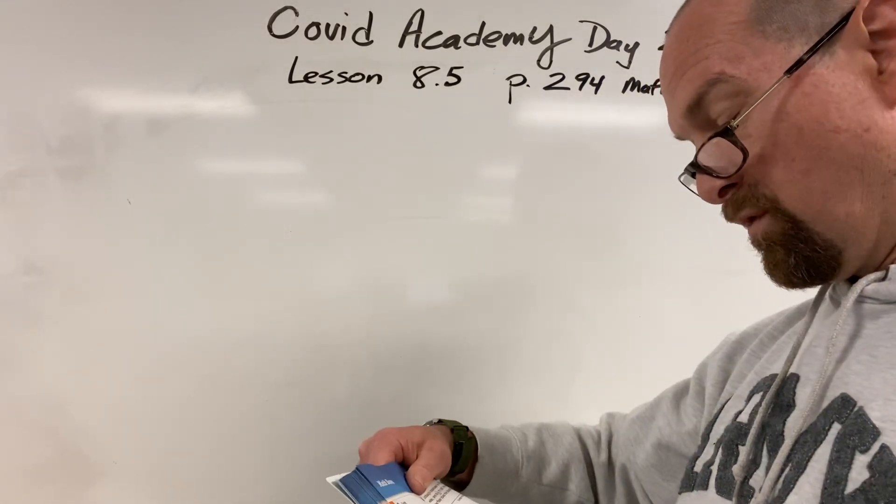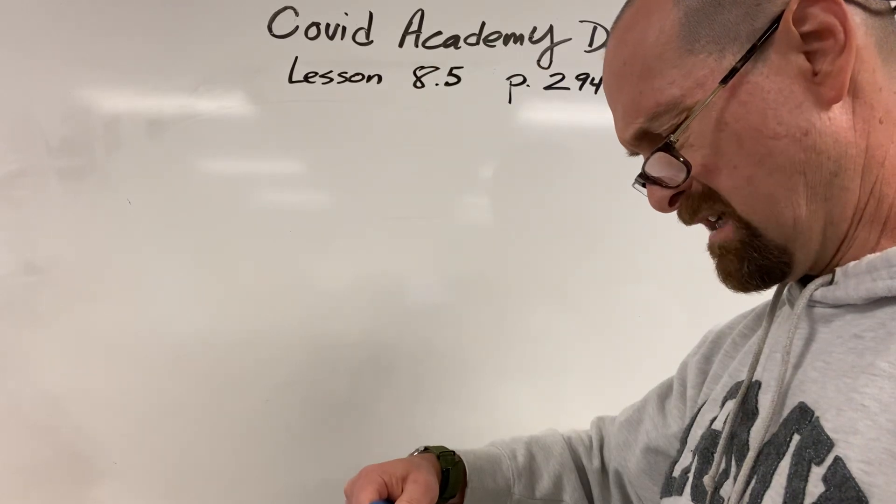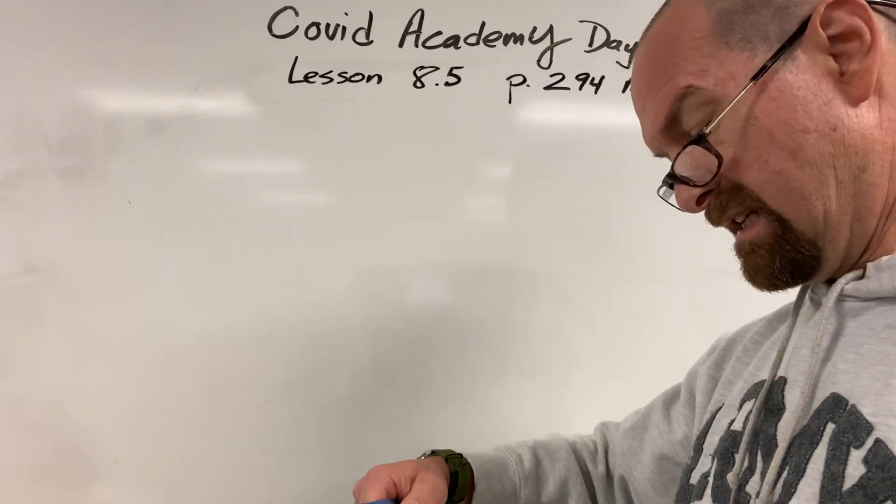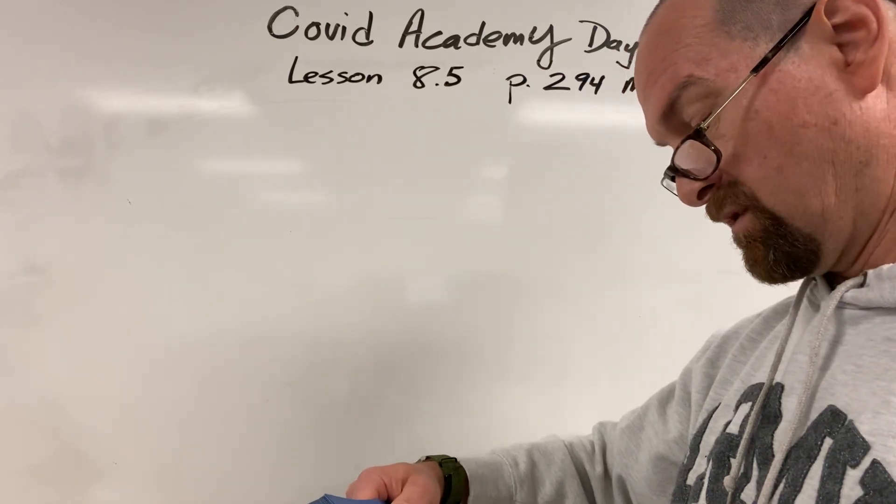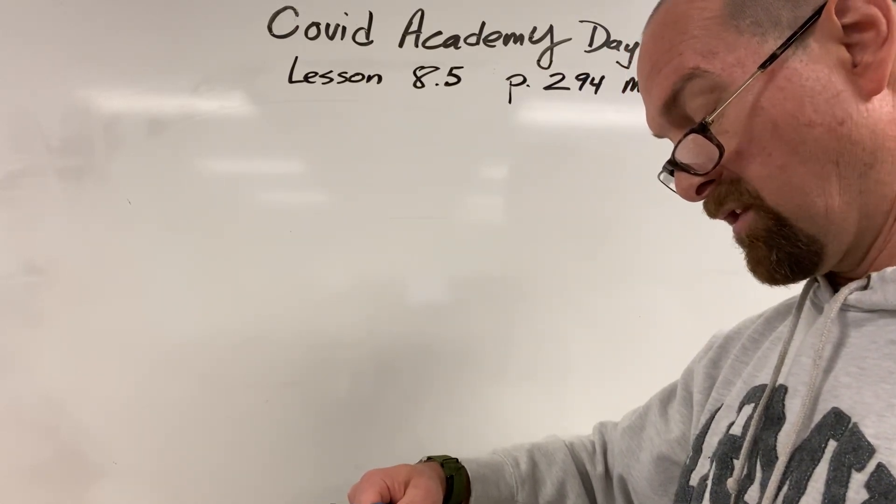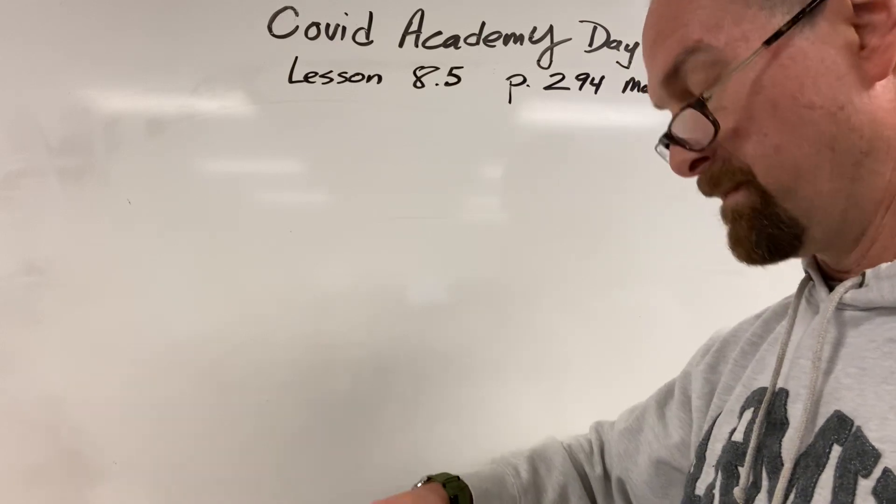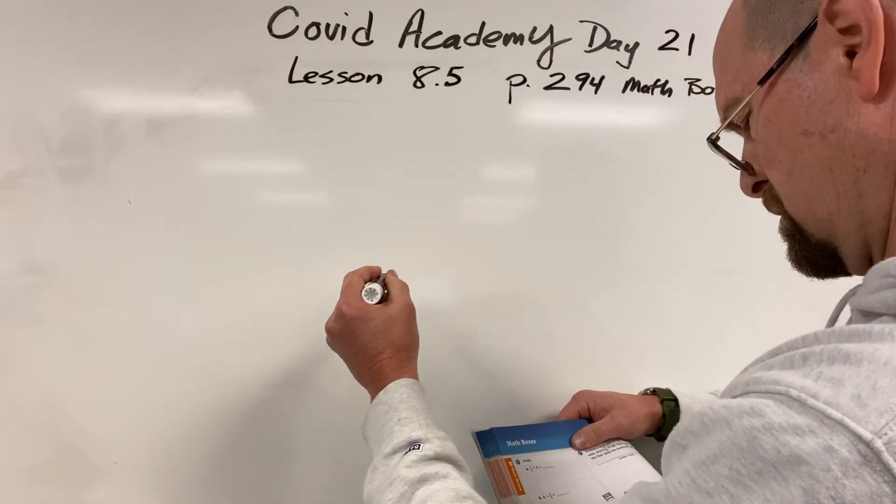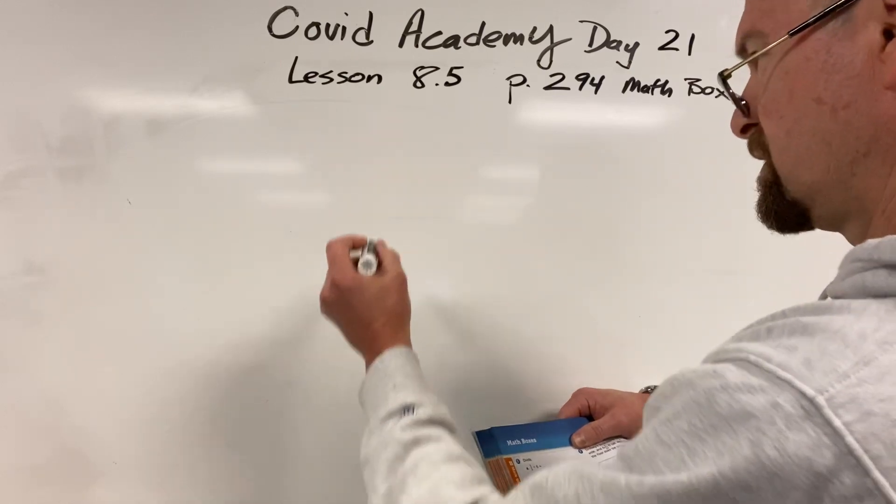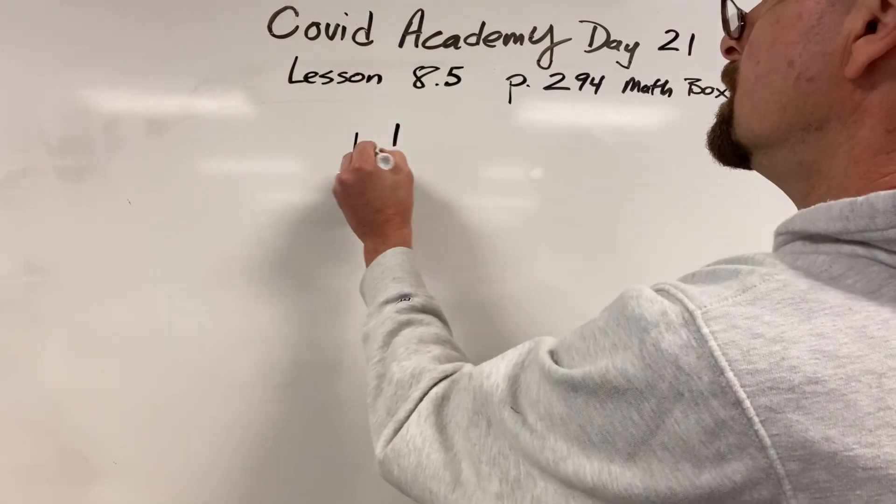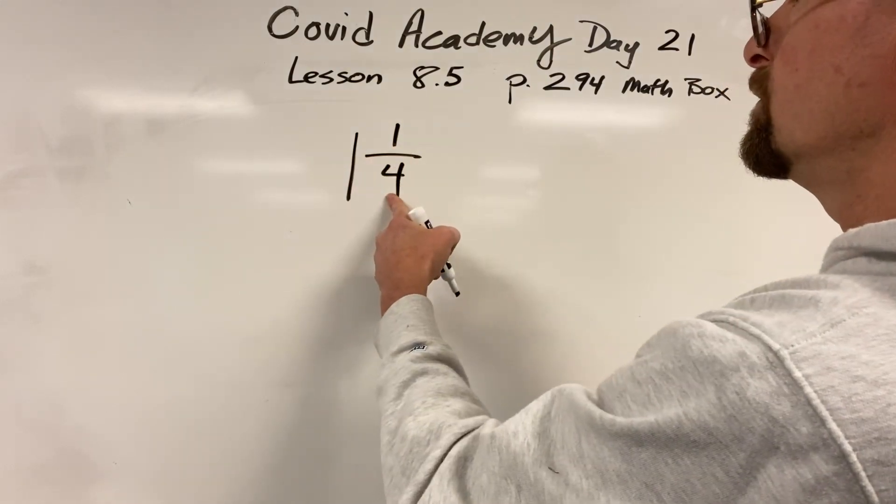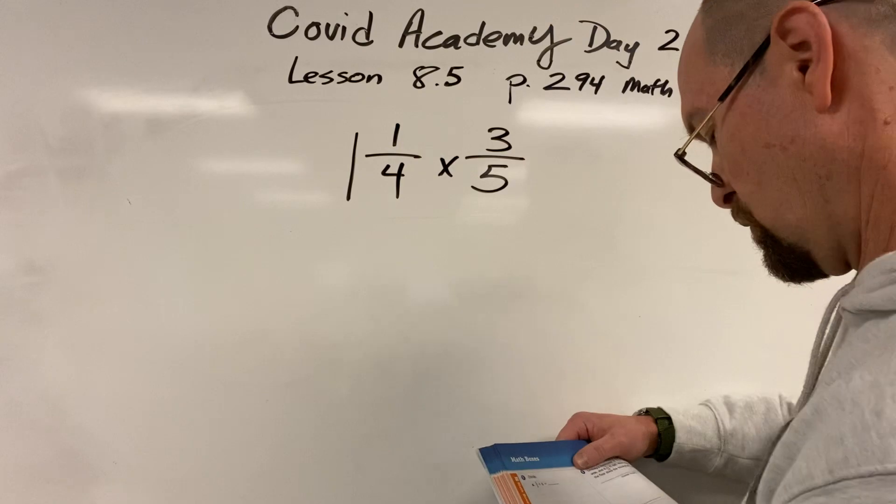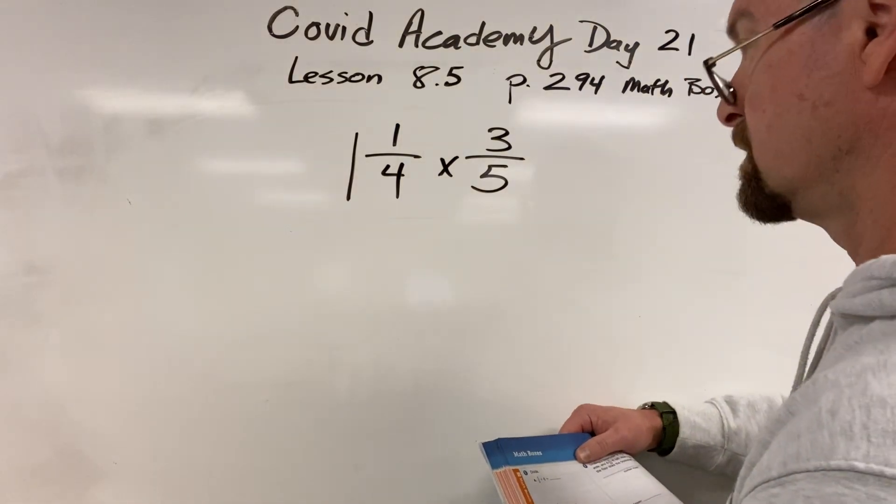Oh, I like that one. It's a tricky one. Ed uses 1 and 1 fourth dishes of paint on a project. That's weird. Each dish holds 3 fifths fluid ounce. How many fluid ounce? So he's got 3 fifths and 1 and 1 fourth of them. So it's 1 and 1 fourth times 3 fifths. That's the number of ones he had, and each one has got 3 fifths. So it's 1 and 1 fourth times 3 fifths.